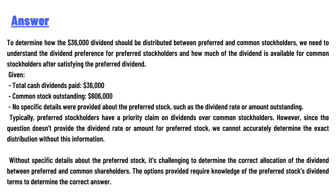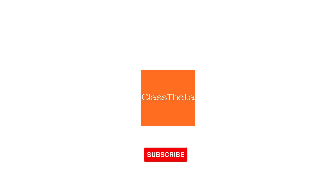No specific details were provided about the preferred stock, such as the dividend rate or amount outstanding. Typically, preferred stockholders have a priority claim on dividends over common stockholders. However, since the question does not provide a dividend rate or amount for preferred stock, we cannot accurately determine the exact distribution. Without specific details about the preferred stock, it's challenging to determine the correct allocation of the dividend between preferred and common shareholders. The options provided require knowledge of the preferred stock dividend terms to determine the correct answer.